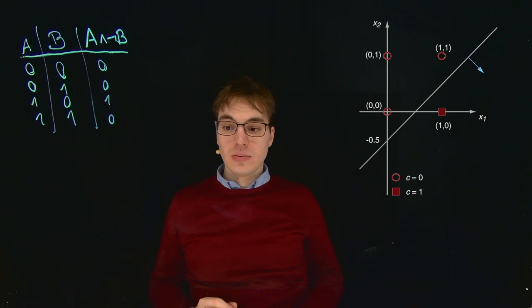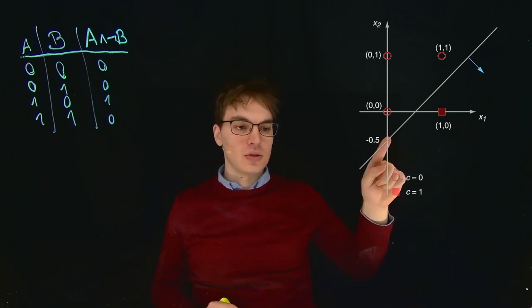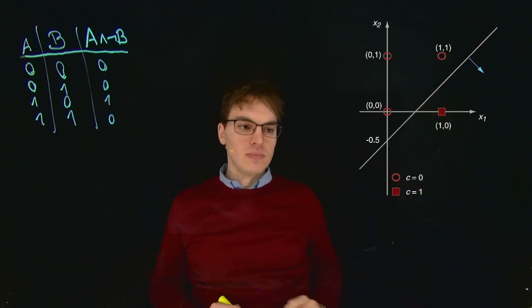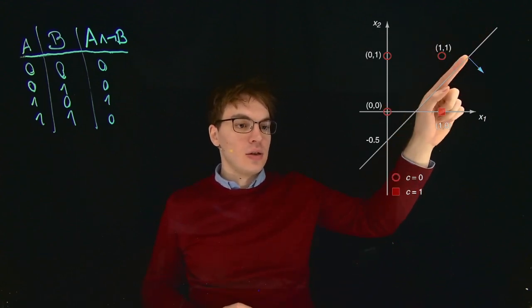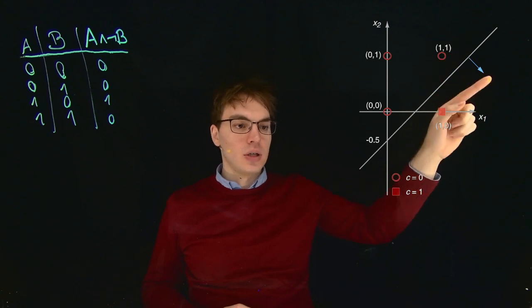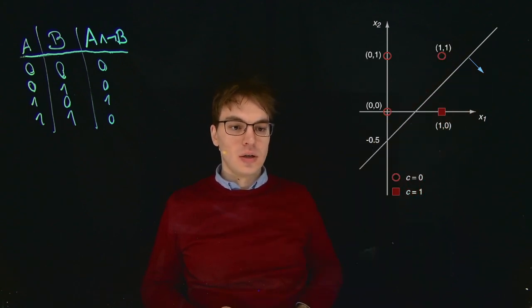What we now want to do is introduce a decision boundary, and we chose this line over here. And what we also have over here is the normal vector, the vector that's orthogonal onto this decision boundary.